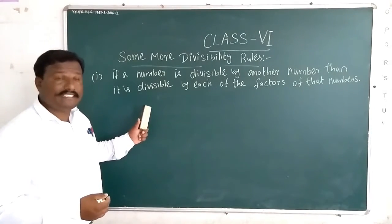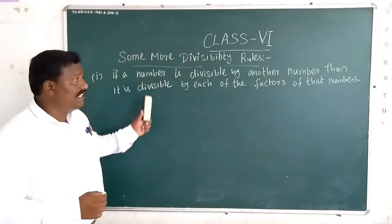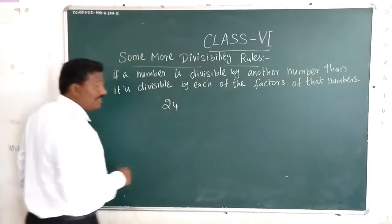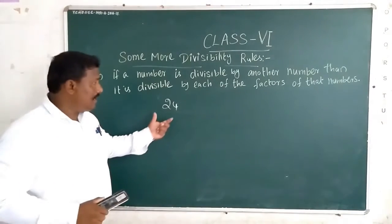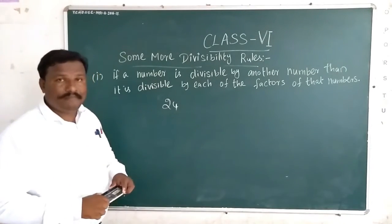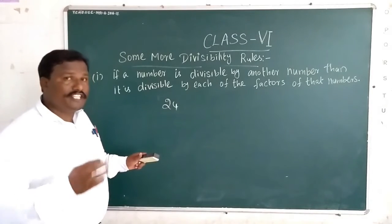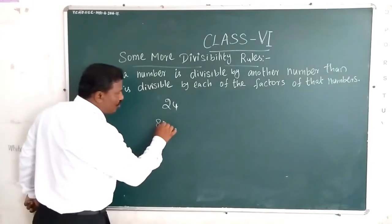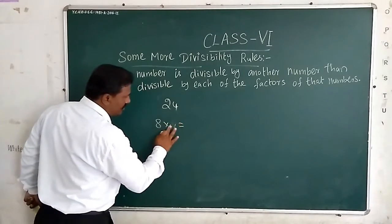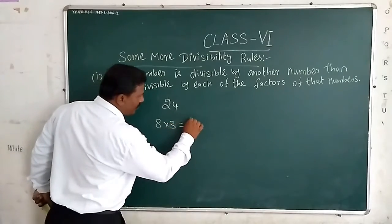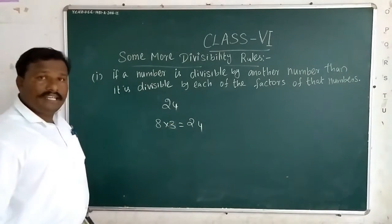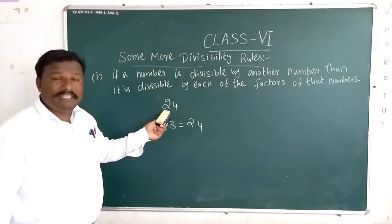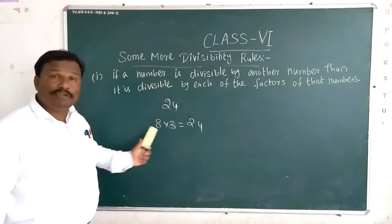Let me take another example. I am taking 24 as the number. Now I want to find the factors of 24. What is the factor of 24? Eight 3s are 24, so 8 and 3 are both factors of 24.